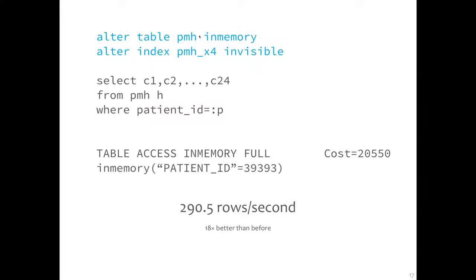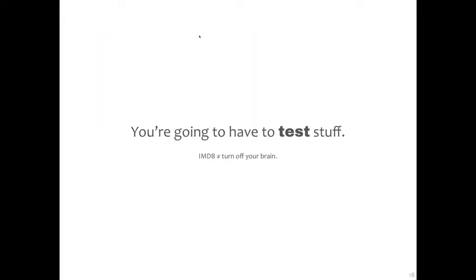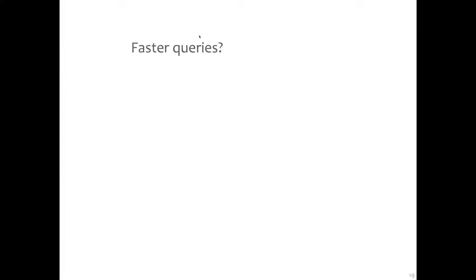The lesson learned from this experiment is that when you turn on this feature, you're still going to have to test things. You may get results you didn't actually expect, and the in-memory database feature is not a substitute for using your brain — turning on in-memory does not mean you can turn off your brain. Some things will go a lot faster without having to touch them, but some things won't, and it may be difficult to figure out why. Bottom line: you need to test. You will get faster queries, but you will need to do a little bit of work.